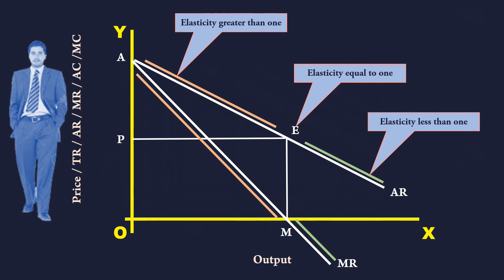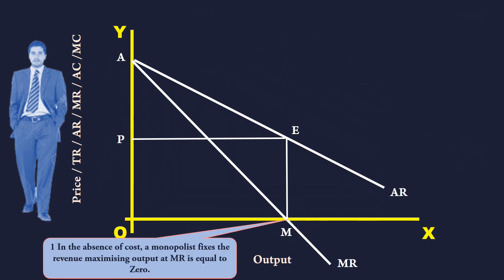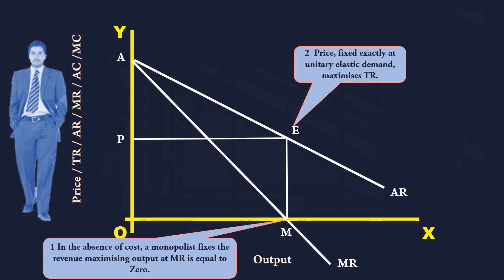Before we conclude, we shall summarize what we have learnt so far. 1. In the absence of cost, a monopolist fixes the revenue maximizing output at marginal revenue is equal to zero. 2. Price fixed exactly at unitary elastic demand, maximizes total revenue.